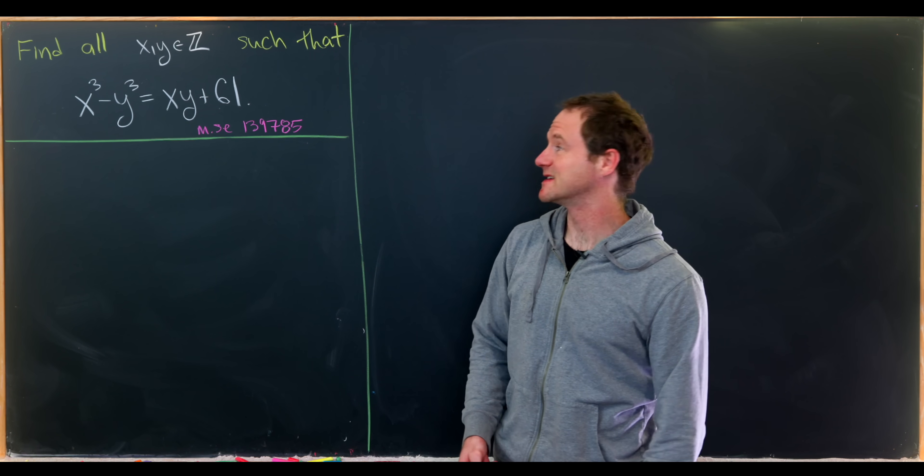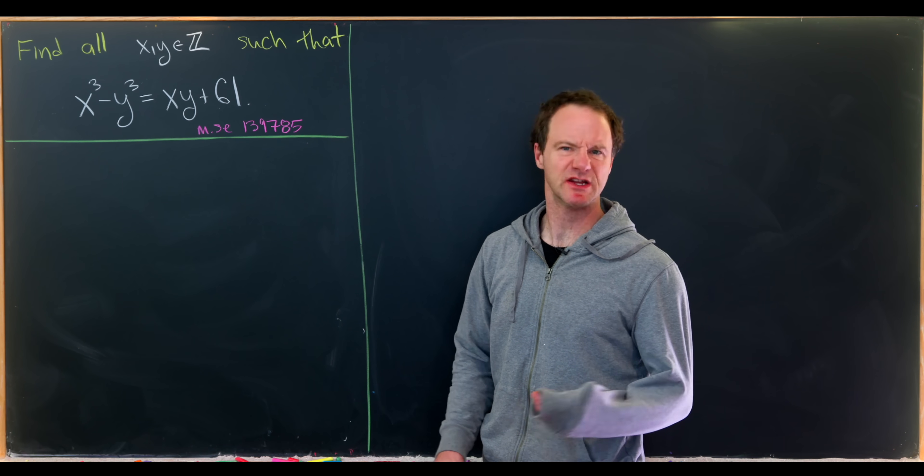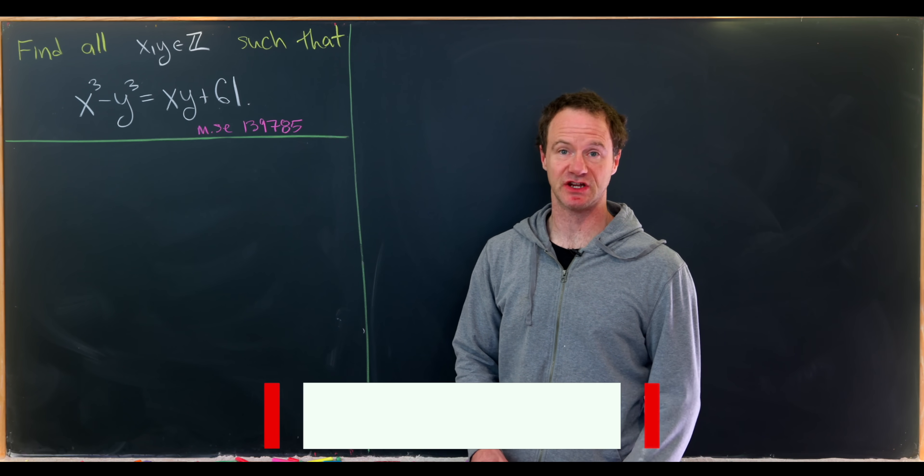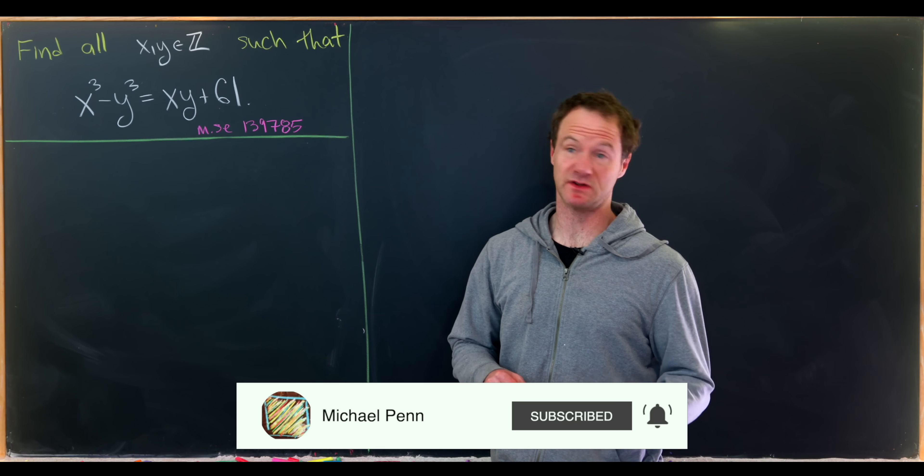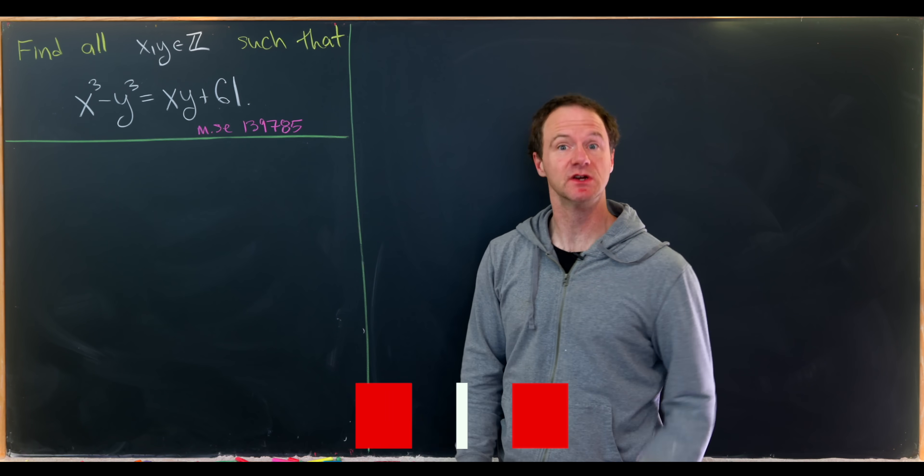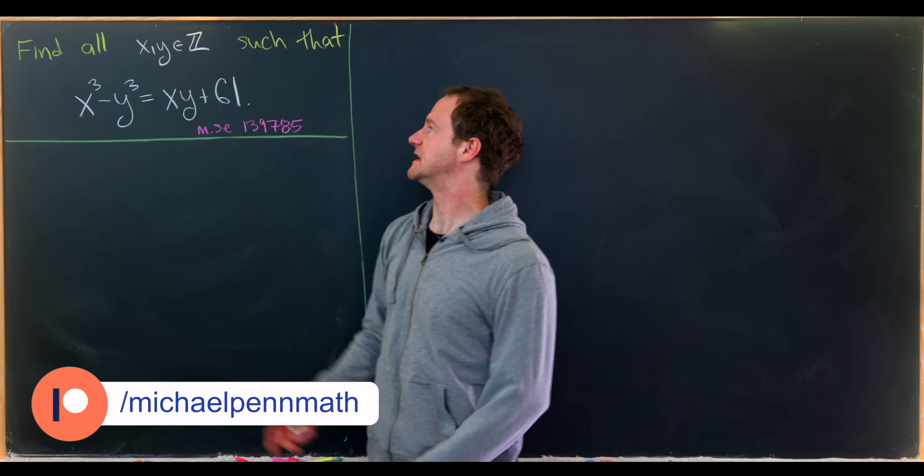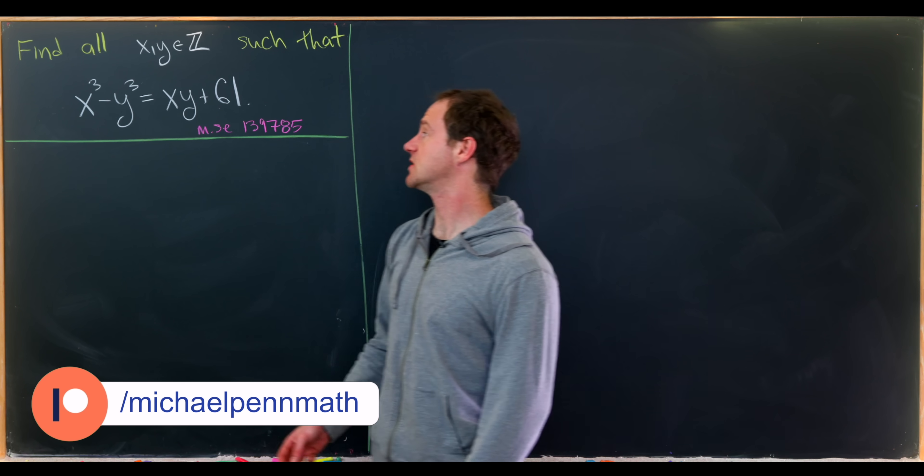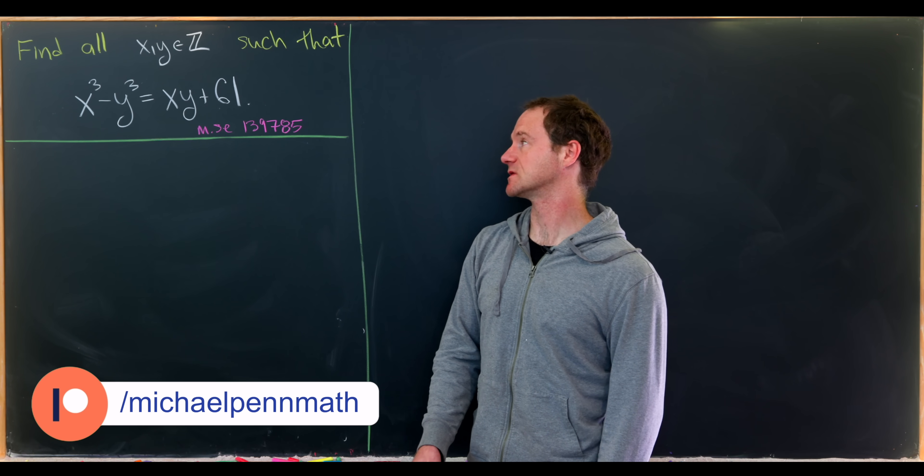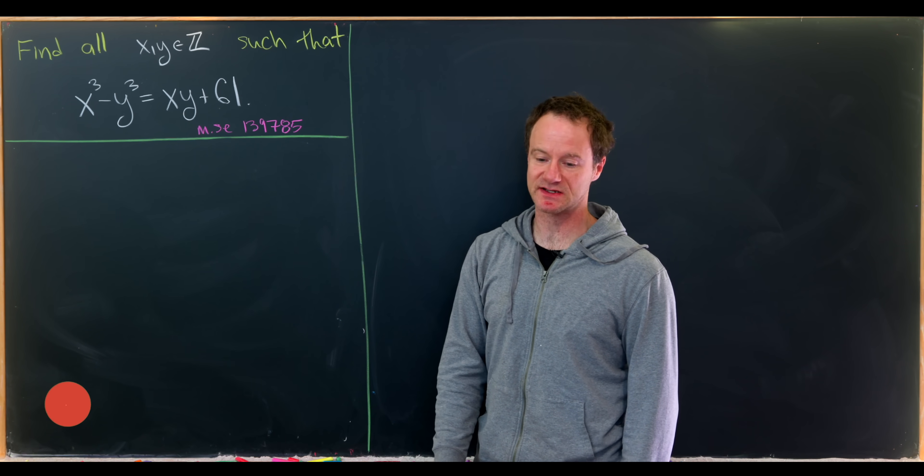Today we're going to look at a really nice cubic Diophantine equation which I found on the Math Stack Exchange. I adapted one of the solutions from this post. Our goal is to find all integers x and y satisfying x cubed minus y cubed equals x times y plus 61.